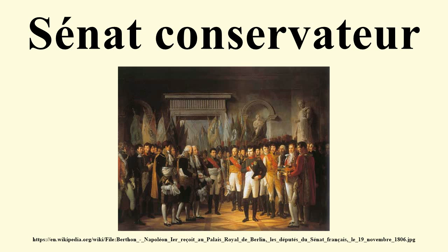The Napoleonic Senate set itself up at the Luxembourg Palace, based in a semi-circle of seats added to the central part of the building by the palace's architect Chalgrin. In the words of the Constitution, the sittings of the Senate are not to be public.